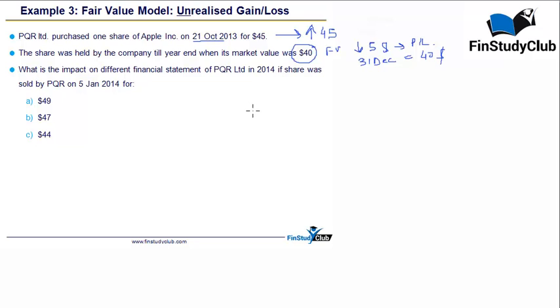This example takes the story forward. It says what is the impact on different financial statement of PQR if the share was sold by PQR on 5th of January. Now, what we need to understand is that the share being sold is in the second year. So therefore, in the first year, there still will be some kind of an unrealized loss in this case of $5. It's only in the second year, which is 2014, has this been realized.